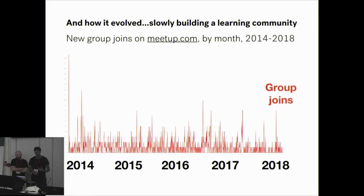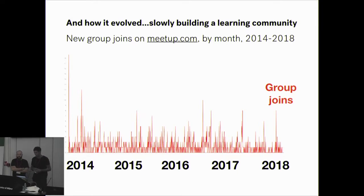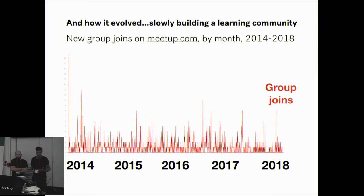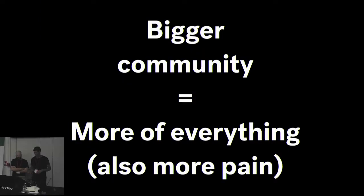This is a graph of how our membership on the Meetup page has evolved — people have been steadily joining since the start. We're now at about 1,400 people in the meetup group, with 70 to 75 people showing up regularly for every meetup. Sometimes we even have to limit events because our venue isn't big enough, but we're really happy that everyone's there and that people are still interested.